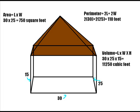For the perimeter, it would be 2L plus 2W, which equals 2 times 30 feet, plus 2 times 25 feet, which equals 60 plus 50 feet, which equals 110 feet.